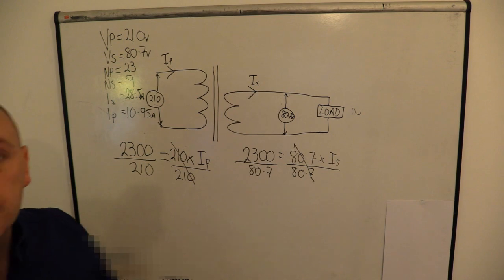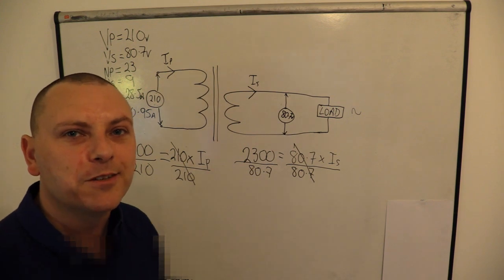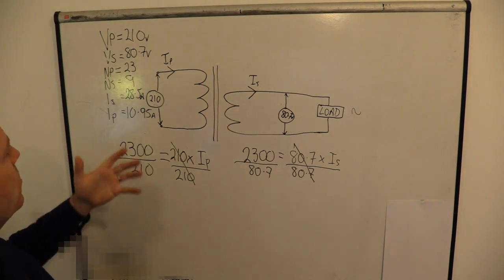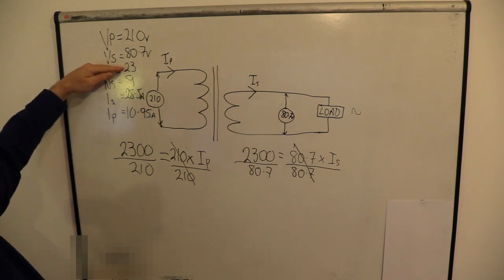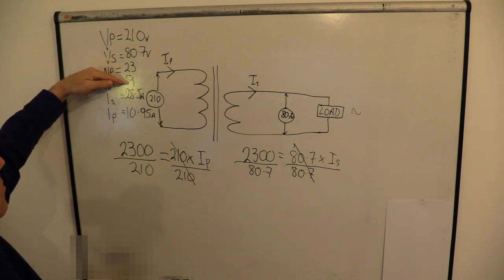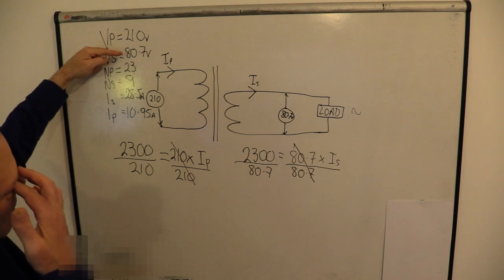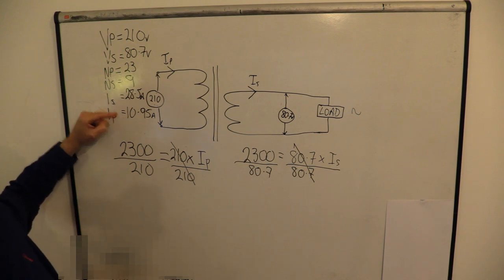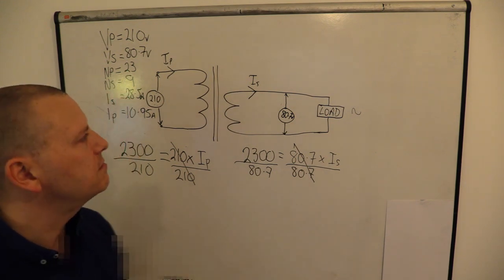Let's have a look at this and see if it makes sense, because it's really important to go back over your numbers and check. We know that if the voltage comes down, the current is going to go up. The primary turns were 23 and secondary were 9 - so it's a step-down transformer and the voltages are stepping down. That would mean the current would have to come up. Primary current was 10.95 amps and secondary has gone up to 28.5 amps. So all of those check out - they all work.